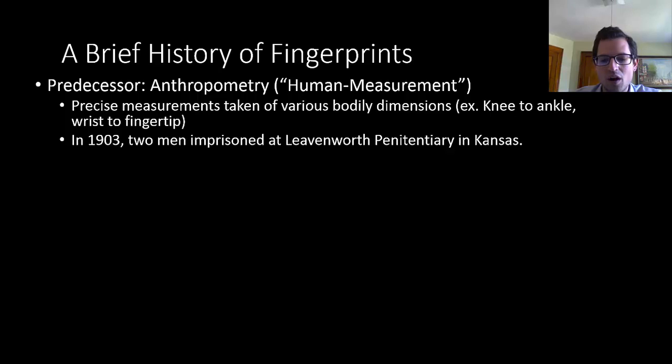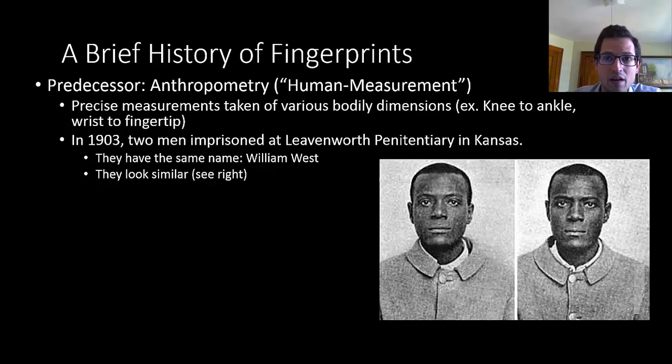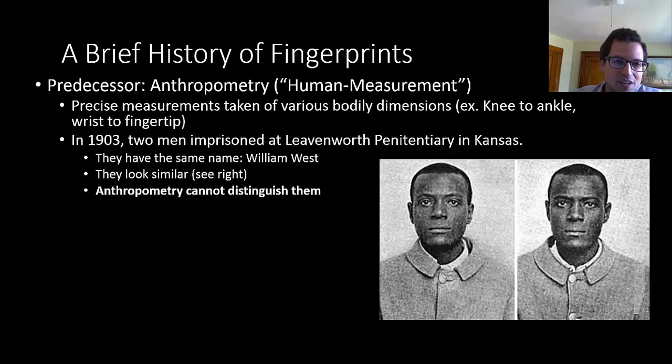This was used for really not all that long, maybe 20 years or so. In the United States, there was a case that made folks feel that anthropometry was maybe not a great system. A man was brought to be imprisoned at Leavenworth Penitentiary in Kansas and they found that he was already there. There was a man already there named William West, as was the person who was brought there. They looked fairly similar, and what's even more surprising is that their bodily dimensions were perfect matches for each other.